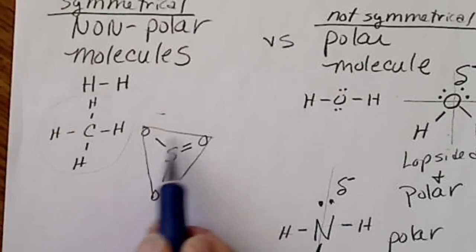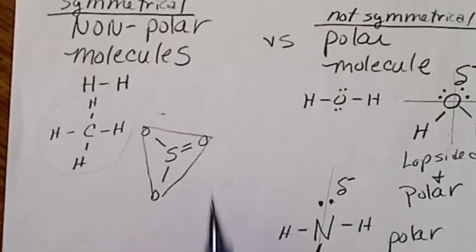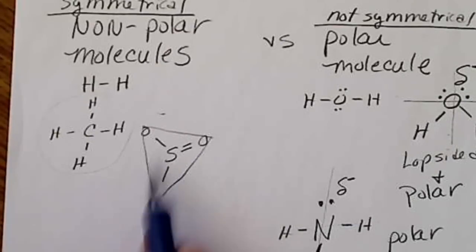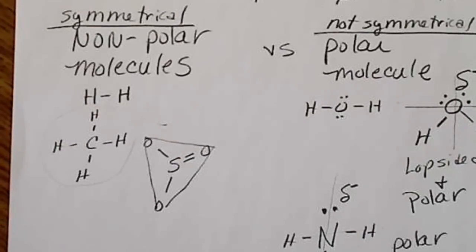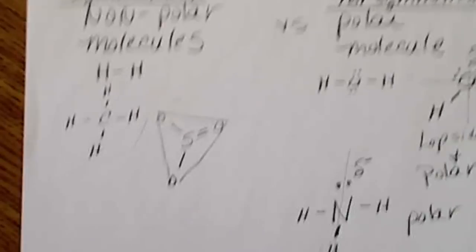We have a symmetrical triangle. Because we have a choice on where to put the double bond, we can think of this, the real structure, as a combination of all three possibilities. This would also be nonpolar.